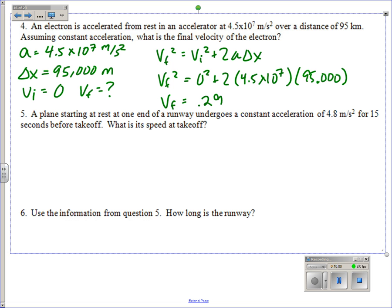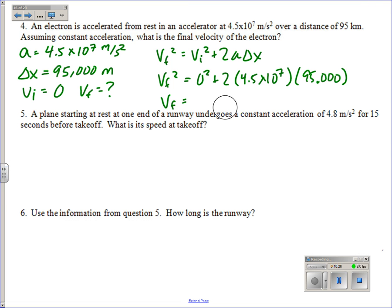Oops, I did 10 to the negative 7th. Let me try that again. That's more like it: 2,924,000, basically 2.9 times 10 to the 7th.